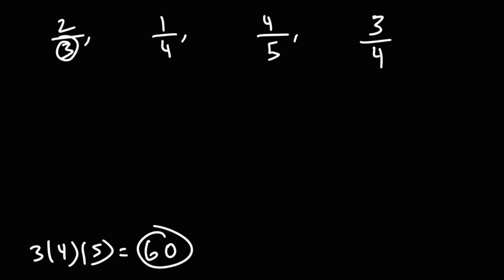60 divided by three is 20, so I'm going to multiply this fraction by 20 over 20. 60 divided by four is 15, so I'm going to multiply this fraction by 15 over 15. 60 divided by five is 12, so I'm going to multiply the third fraction by 12 over 12. 60 divided by four, well that's 15 again, so we'll multiply this by 15 over 15.